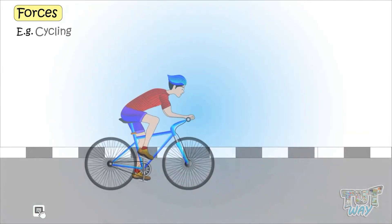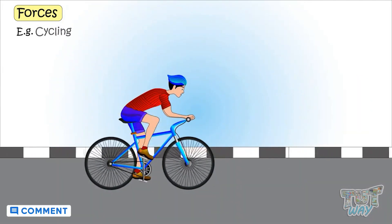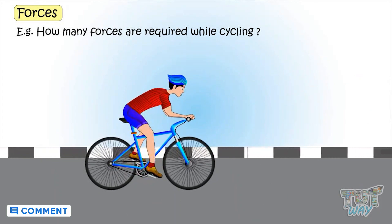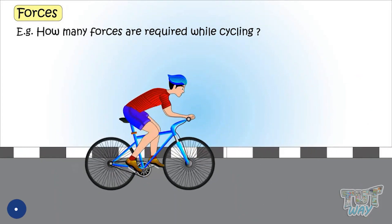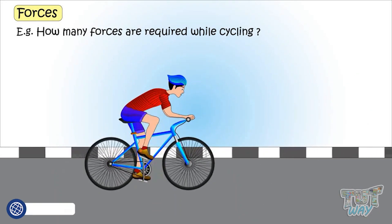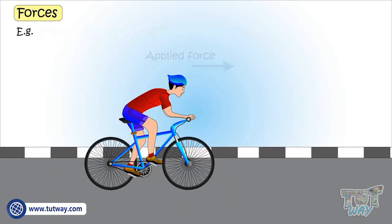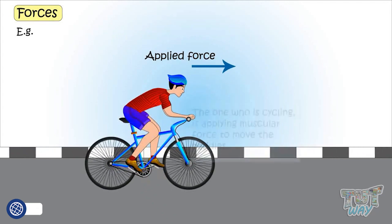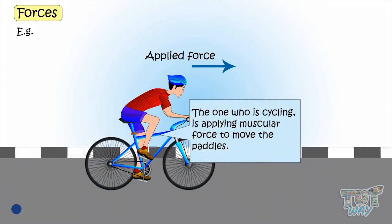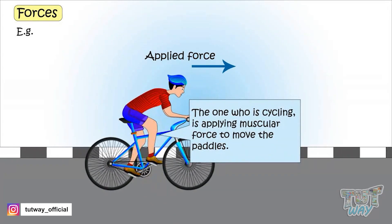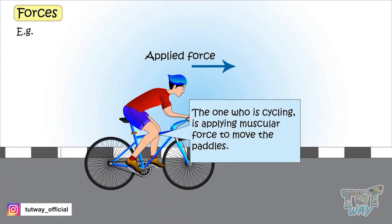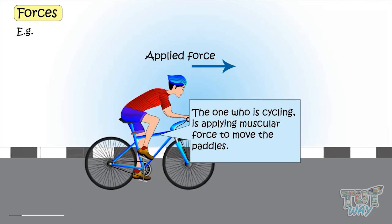Cycling. Now let's see how many forces are required while cycling. First one is the applied force — the one who is cycling is applying his muscular force to move the paddles.